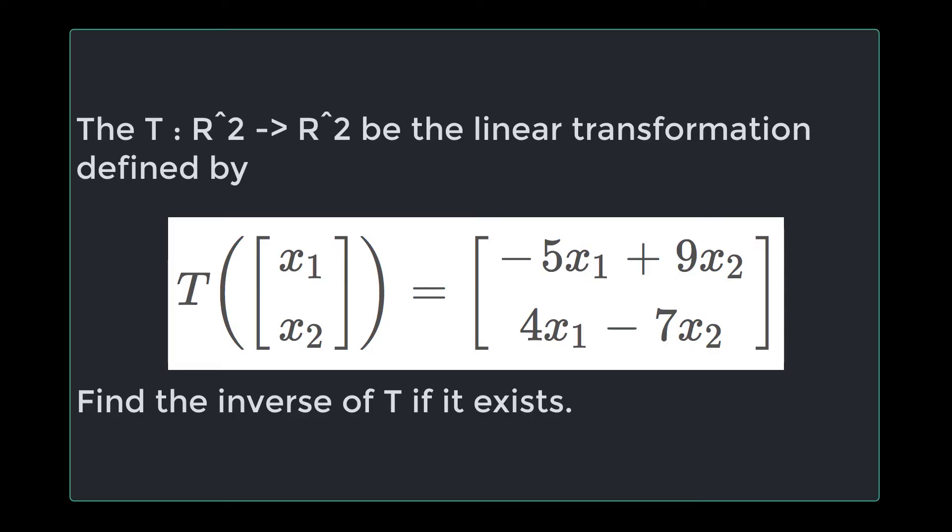The question we're working on today is: Let T from R2 to R2 be the linear transformation defined by T of x1, x2 equals minus 5x1 plus 9x2, 4x1 minus 7x2. Find the inverse of T if it exists.